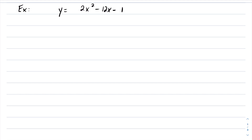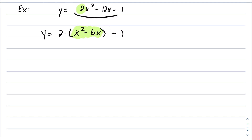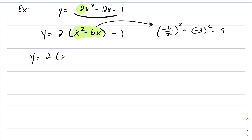If you have a quadratic in standard form where the a value is not 1, you have to factor that out. The idea of completing the square is you have to factor this 2 out of the first two terms only. So I'm going to factor that 2 out, in which case I'm left with x squared minus 6x, minus 1. Now you're going to complete the square on what's inside. You identify your b value, which in this case is negative 6. You divide it by 2 and square it, which gives you negative 3 quantity squared, which is 9. So I'm going to add that 9 and subtract that 9 inside of the brackets, because we're focusing our attention on completing the square on this expression. The 2 and the minus 1 are on the outside, which we'll deal with later.